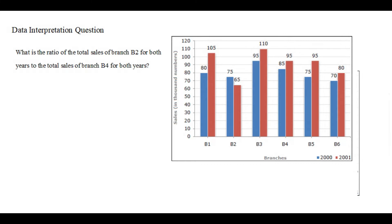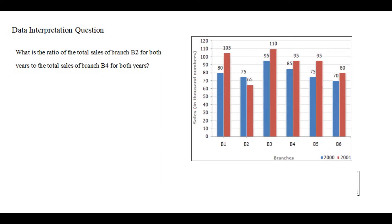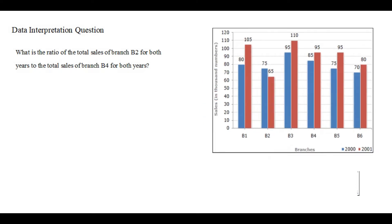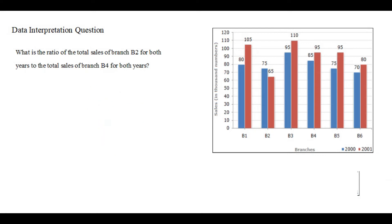While analyzing the graph you have to solve the questions asked. The question says: what is the ratio of the total sale of branch 2 for both years to the total sale of branch 4 for both years? So we need to find the ratio of branch 2's total sales to branch 4's total sales.